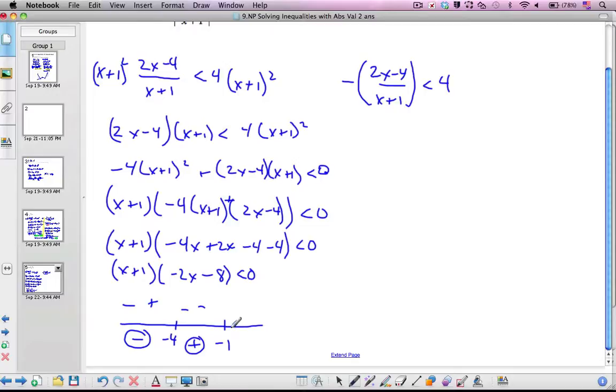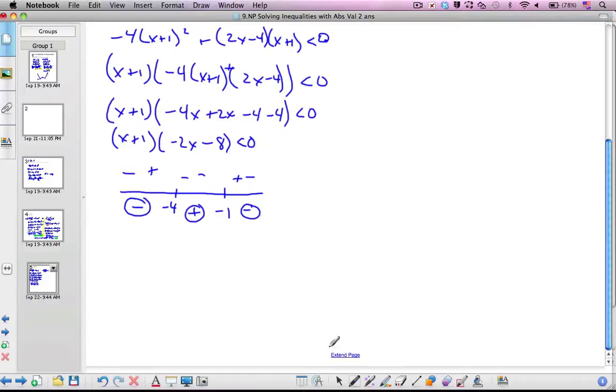Looking to the right of negative 1, let's try 0. I get positive and negative. So a positive and negative makes a negative.